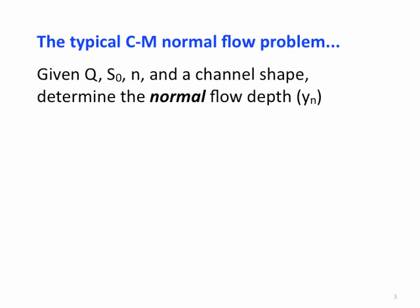We're going to be given Q and given S0 and given N and the channel shape because rarely are we trying to actually solve for Q. The flow rate is typically determined by upstream and sometimes downstream conditions in the channel, and we're interested in, given some Q, how is the channel going to behave?